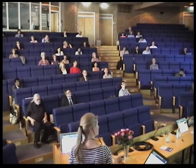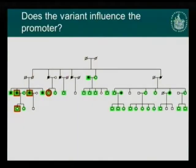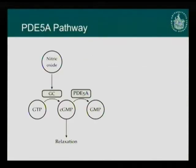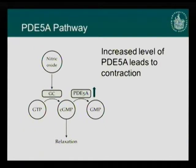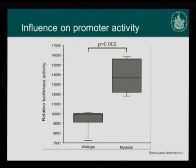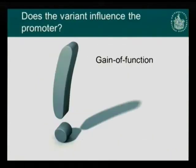To perform the luciferase assay, we selected two affected and two unaffected family members to make clones. We would expect PDE5A levels to increase in order to have an increased risk of myocardial infarction. The results show that the wild type has significantly lower luciferase activity than the mutation. That means we have a gain of function: this variant actually increases the activity of the promoter, increasing PDE5A levels and thereby increasing the risk of myocardial infarction.